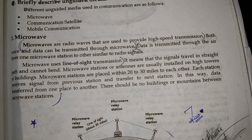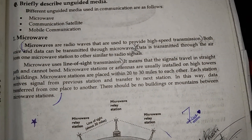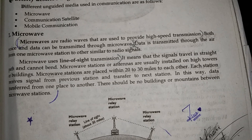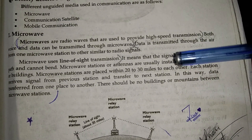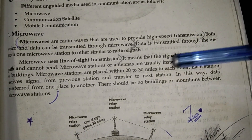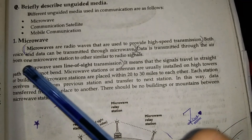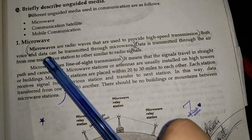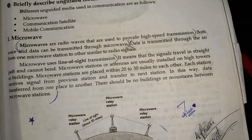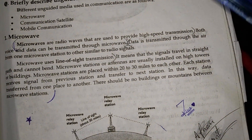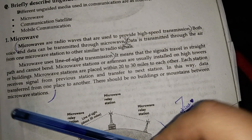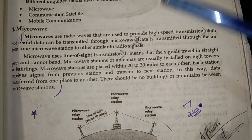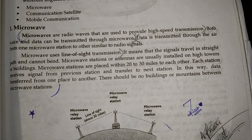What are microwaves? Microwaves are radio waves used to provide high-speed transmission. These radio waves carry data — simple text, video, and voice — and can be used easily and quickly.